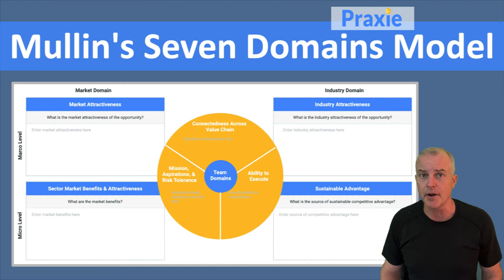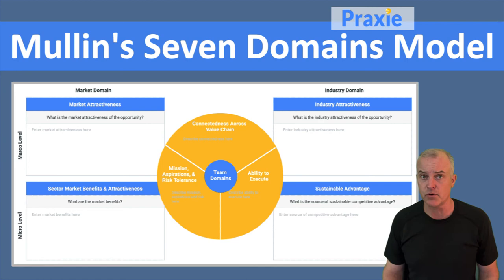The seven domains are categorized into three main areas. The first is team, and team is much broader than just a set of individuals on a team. It's really about your mission and your aspirational goals you're trying to achieve as an organization, the interconnectedness of your whole value chain, and how central you are to your value chain in terms of all your suppliers and your partners and where you fit within that value chain.